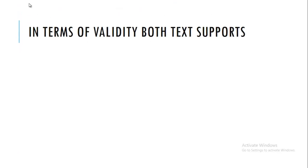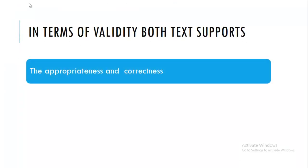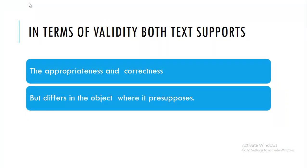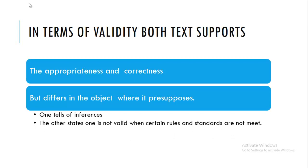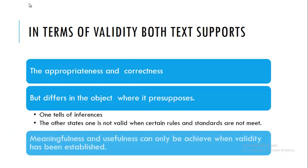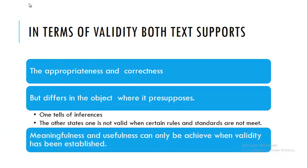In terms of validity, both texts support the appropriateness and correctness, but differ in the object where it presupposes. One tells of inferences; the other states one is not valid when certain rules and standards are not met. Meaningfulness and usefulness can only be achieved when validity has been established.